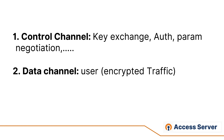When OpenVPN establishes a connection, there are two different streams going through. Like any other protocol, OpenVPN has a control channel and a data channel, and messages for each of these streams all go through the same connection. The control channel is used for key exchange, authentication, and parameter negotiation like cipher settings. The data channel is where the real user traffic is exchanged — and to improve performance, this is where we want to focus, because that is where the actual user payload is traveling.